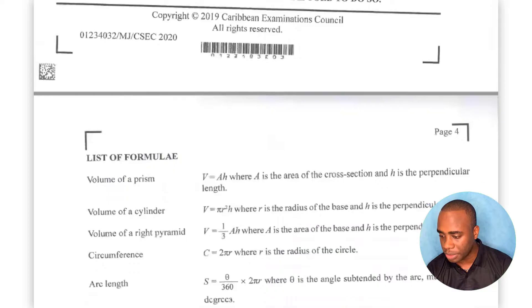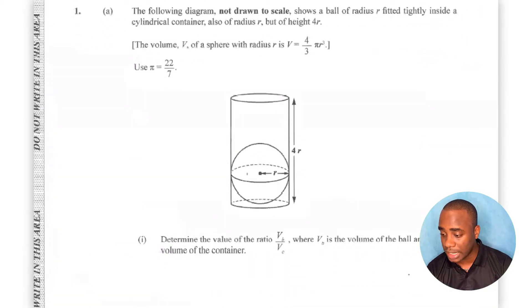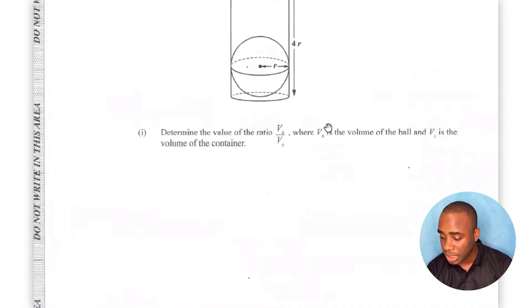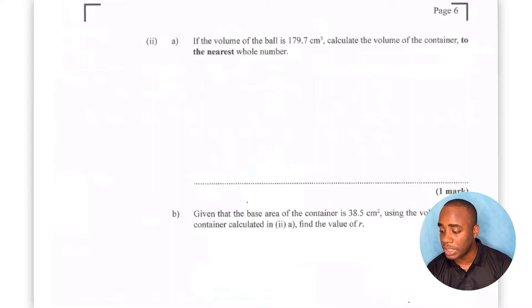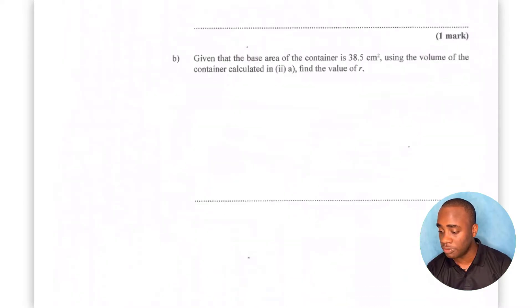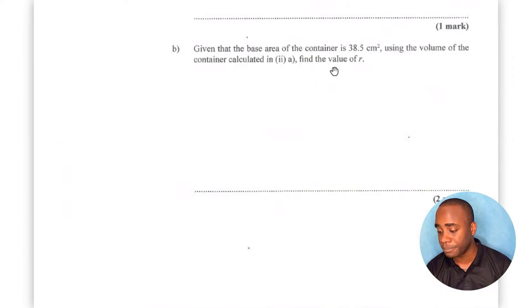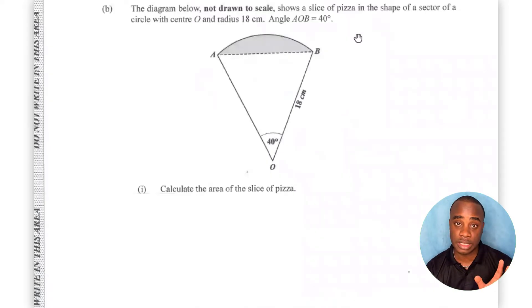Here is a Paper 3 for July 2020. In this paper, the first question is a volume question where it gives you a cylindrical container and a ball inside the container. You're supposed to determine some ratio of the volume of the ball to the volume of the container, calculate something, and calculate something else given another value — in this case, the base area.